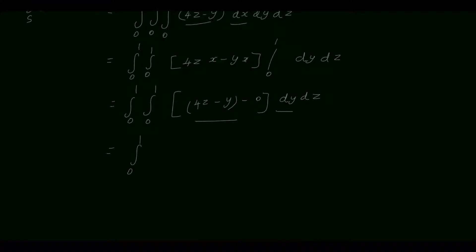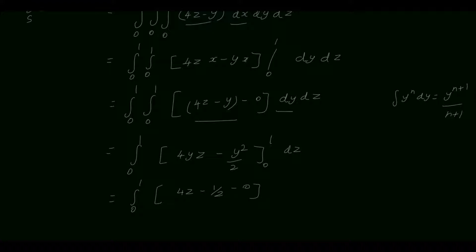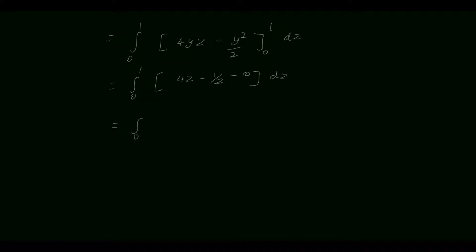Now integrate 4z minus y with respect to y, keeping the limits of z constant from 0 to 1. Integration of 4z with respect to y is 4yz, minus integration of y with respect to dy is y squared by 2, using the formula y^n dy equals y^(n+1)/(n+1). Applying limits 0 to 1: with upper limit y equals 1, we get 4z minus 1/2; with lower limit 0, we get 0. So the result is 4z minus 1/2, into dz.